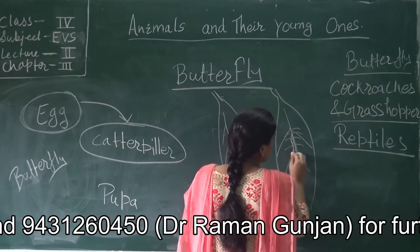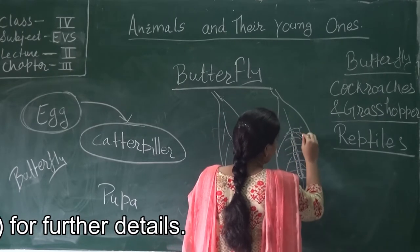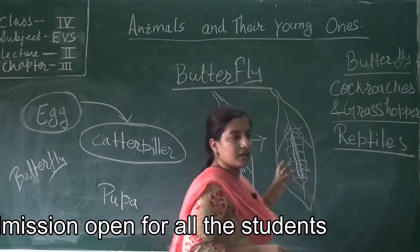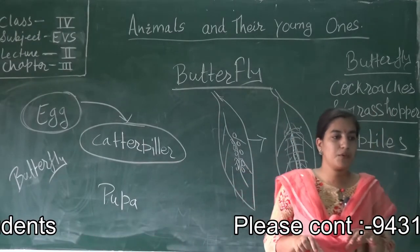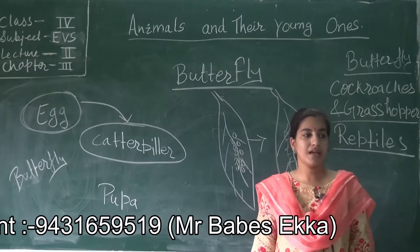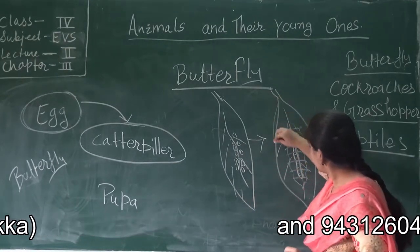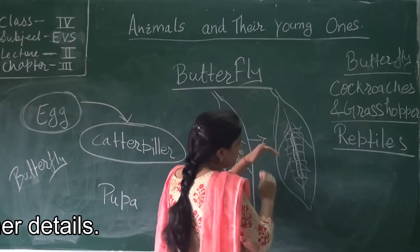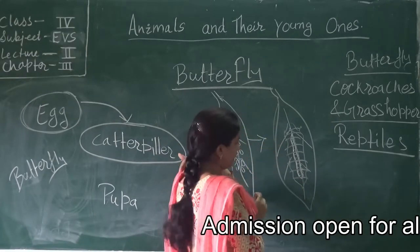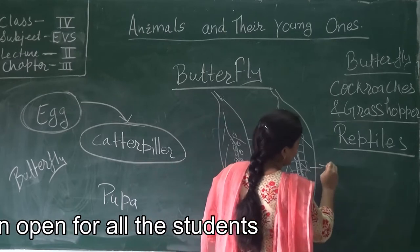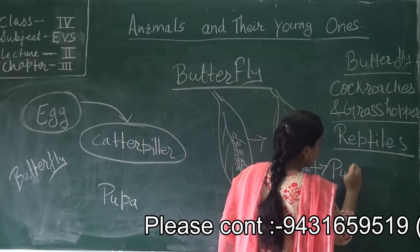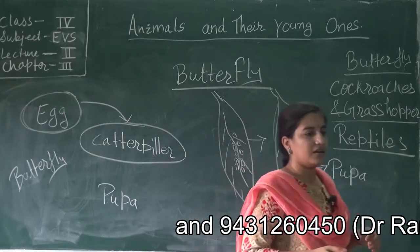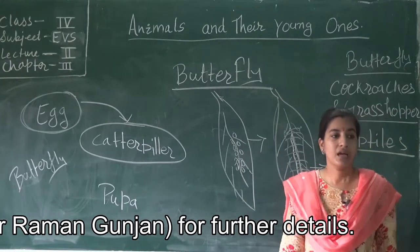The butterfly builds a protective shed — a white color protective layer around that particular caterpillar. So it develops a protective covering around itself. This is termed as pupa. The stage after the caterpillar, where a protective layer forms around it, is known as pupa.